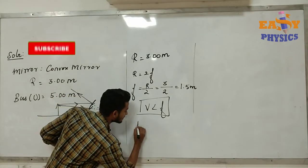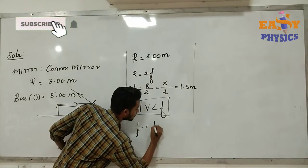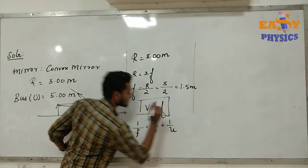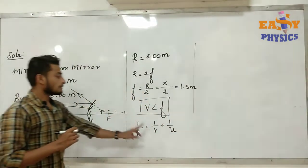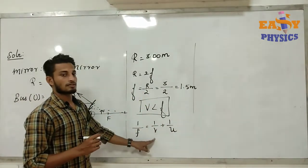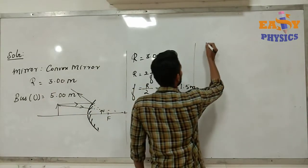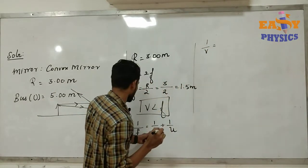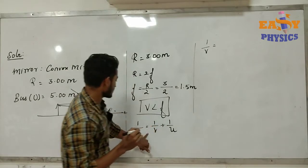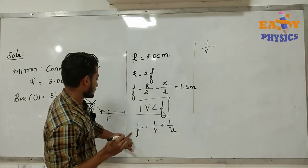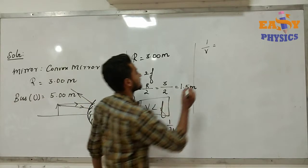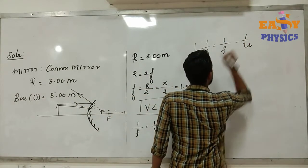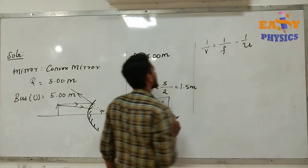First, we apply the mirror formula: 1 by f equals 1 by v plus 1 by u. Rearranging this relation gives us 1 by v equals 1 by f minus 1 by u.